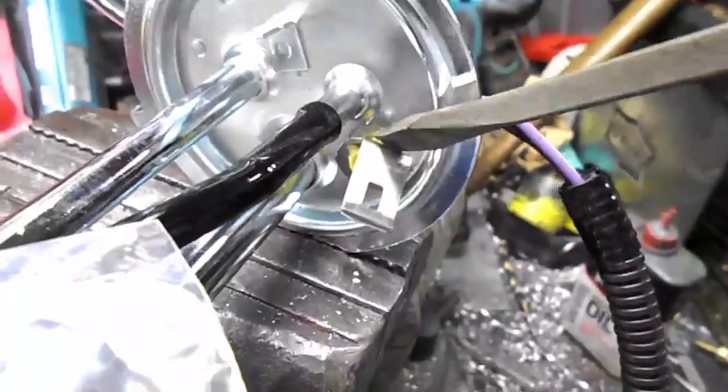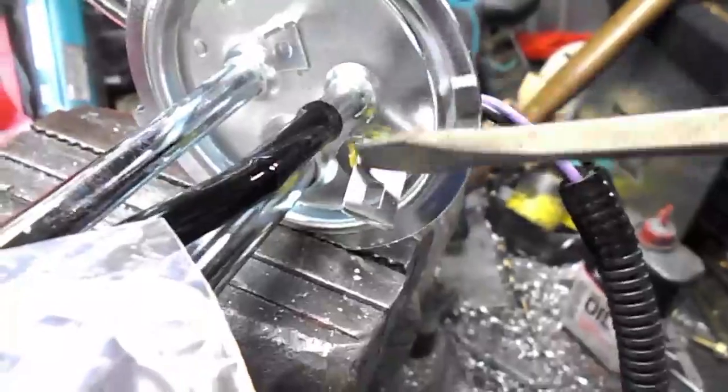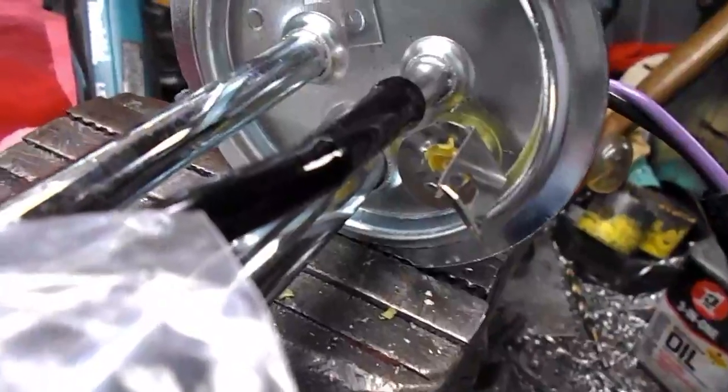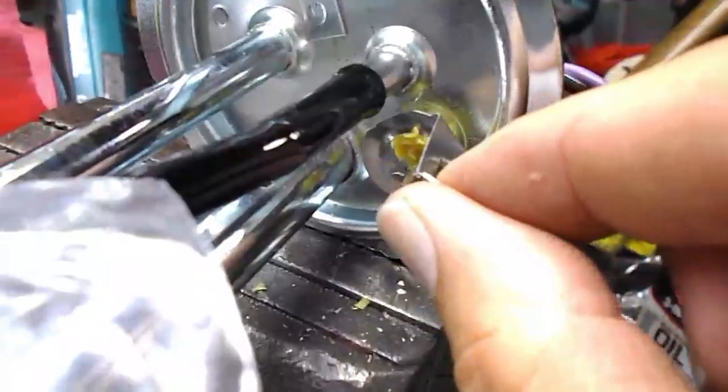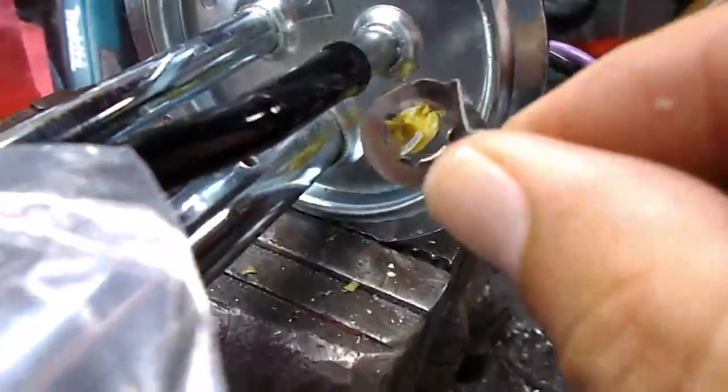Basically you just want to pry this tab off right here. Once you get this tab off, you don't really care if you damage anything, so just get in there and get brutal with it, pry it off, and then what that allows is the bulkhead fitting, the original one, to come out.